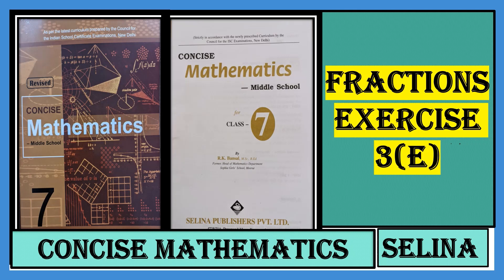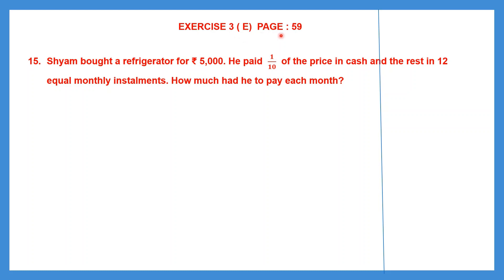Hello students, let's do fractions exercise 3. Exercise 3E is on page number 59. We are with question 15. Shyam bought a refrigerator for 5000 rupees. He paid one tenth of the price in cash and the rest in 12 equal monthly installments. How much had he to pay each month?